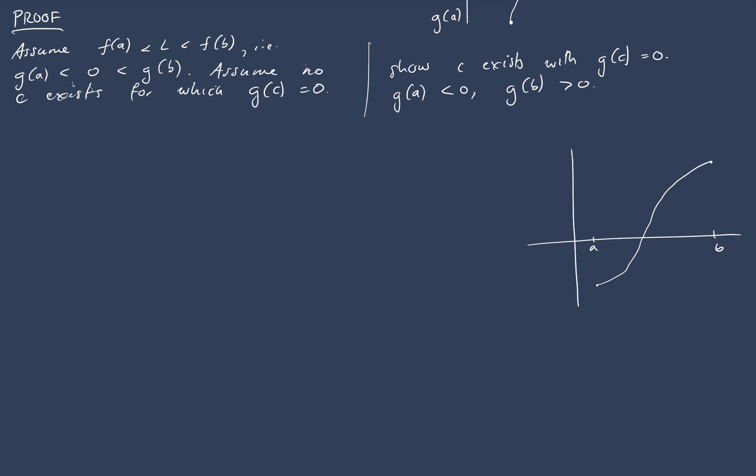But actually we don't know this at this point. All we know is that our function is less than 0 at a, and is greater than 0 at b. So what we're going to do is we're going to go back and use our nested interval property again.